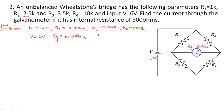In the unbalanced condition, the unknown resistor value cannot simply be calculated as before. When the bridge is unbalanced, we can measure the current flowing through the galvanometer. To calculate Ig, we treat the galvanometer as the load between points A and B, then open-circuit the galvanometer and calculate the Thevenin's equivalent across A and B.